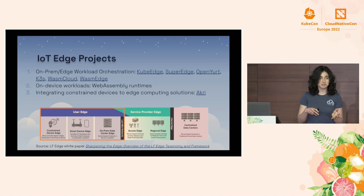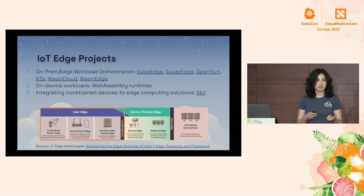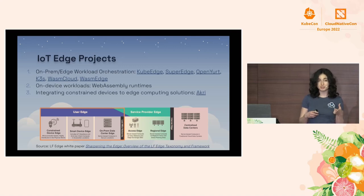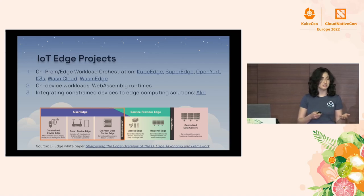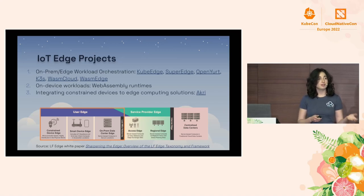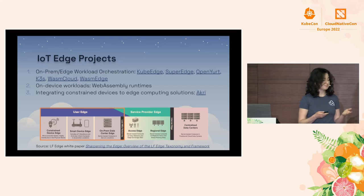As you move to smaller compute, you have smart devices like IP cameras that have a little extra compute, where you may be able to embed some extra workloads. There's discussion happening around putting a WebAssembly runtime on these devices and adding some modules there — work that's being explored right now. And then at the smallest scale, there are these really constrained devices with one fixed function — sensors, controllers — that have just enough compute to do exactly what they need to do, so we can't put any extra workloads on them.